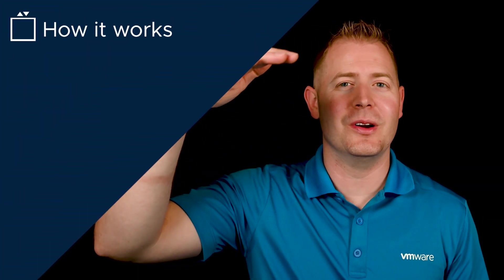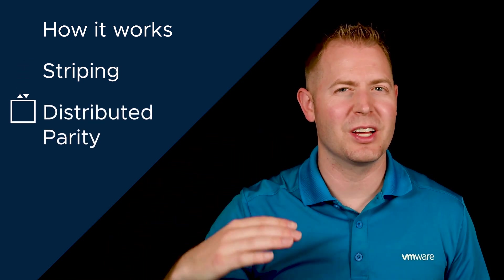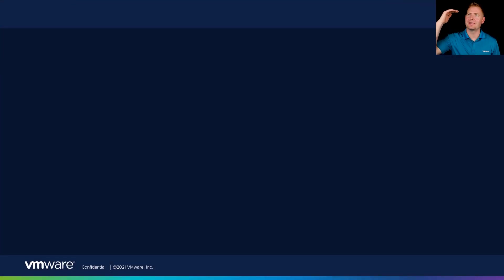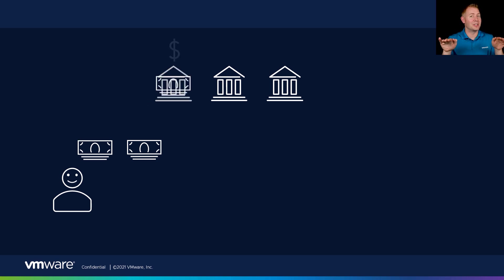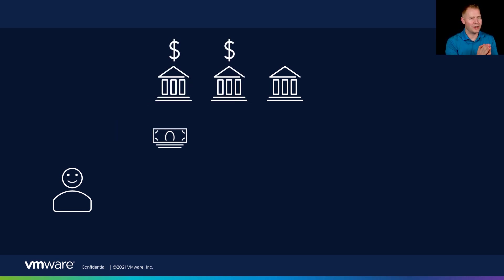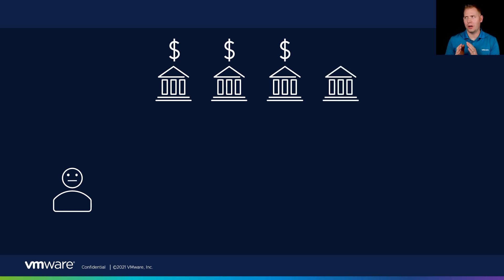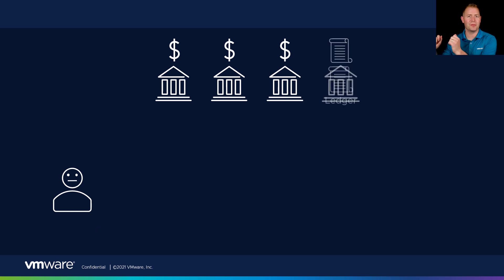For RAID 5, I'm currently picturing an elevator. We're going to start at the very top and do three layers deep to talk about how RAID 5 works. Let's say we've got $300. I want to put that money into a bank, but I'm not fully trusting of banks, so I want to spread it across a couple of different banks. I put $100 in this bank, $100 in this bank, and $100 in this bank. Then I need to track where I put all my money, so I create a ledger and put that in a fourth bank.